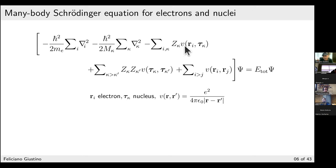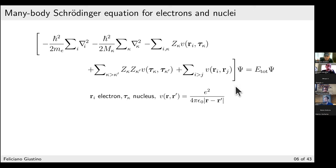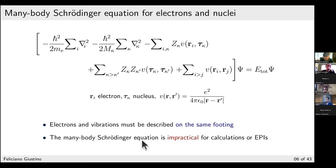The Hamiltonian contains: kinetic energy of the electrons, kinetic energy of the nuclei, Coulomb attraction between each electron and each nucleus, Coulomb repulsion between pairs of nuclei, and Coulomb repulsion between pairs of electrons. In principle we would like to solve this equation — it contains everything we need to know. However, even fixing the nuclear positions and solving only for electrons is extremely difficult. Allowing the nuclei to move as well makes it essentially impossible, with no exact numerical solutions available.